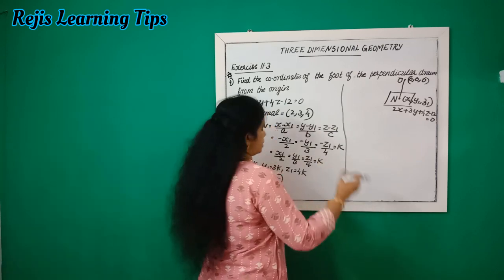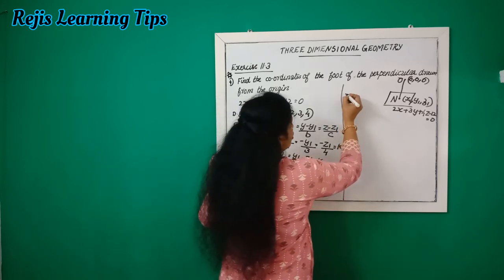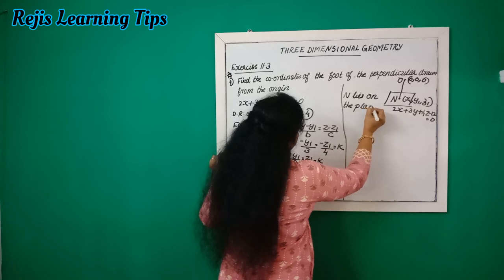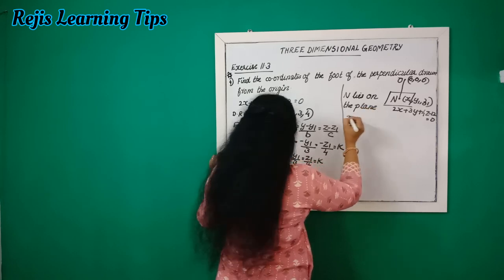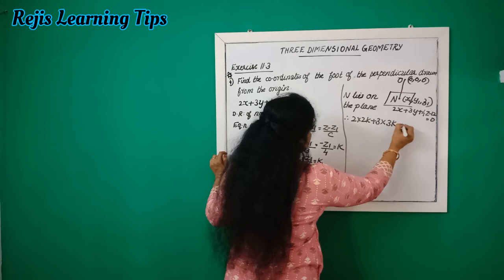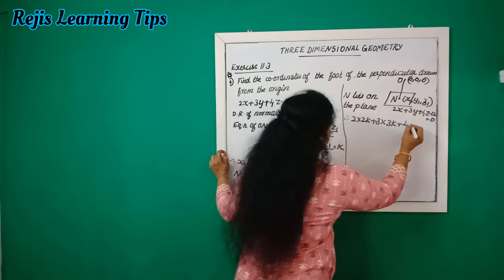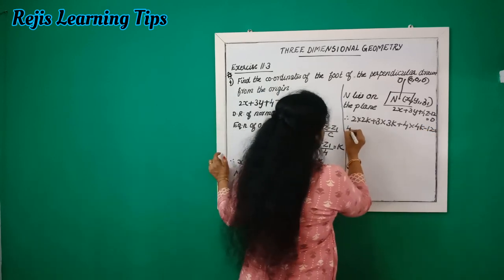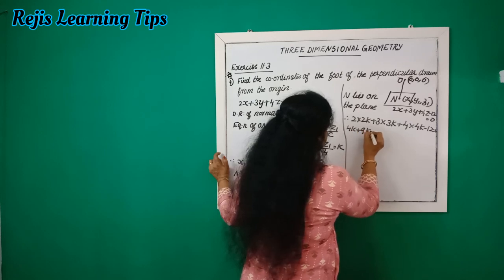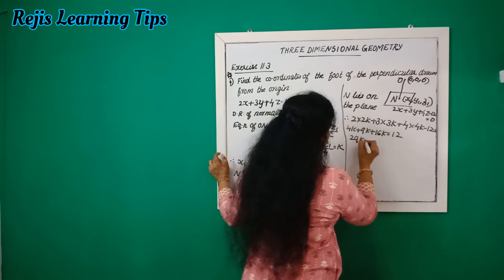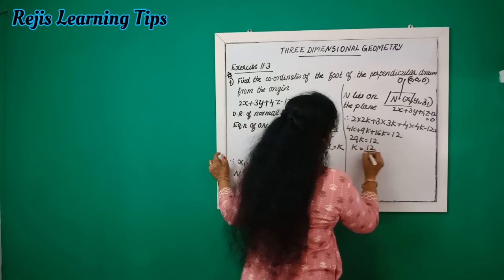Substituting (2k, 3k, 4k) into the plane equation 2x plus 3y plus 4z minus 12 equals 0: we get 2(2k) plus 3(3k) plus 4(4k) minus 12 equals 0, that is 4k plus 9k plus 16k equals 12, so 29k equals 12.